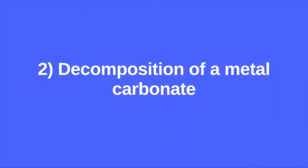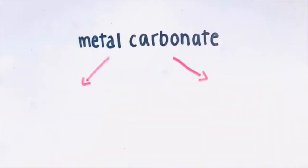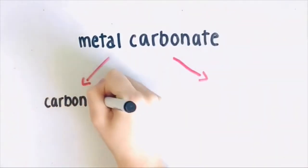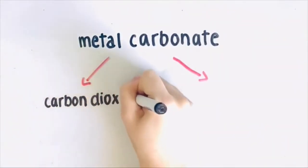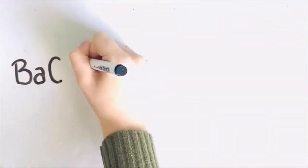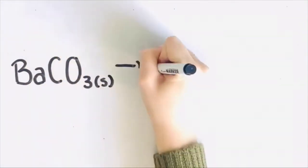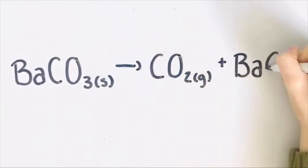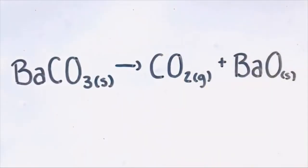Secondly, decomposition of a metal carbonate. Metal carbonates decompose into carbon dioxide and a metal oxide. For example, barium carbonate breaks down into carbon dioxide and barium oxide.